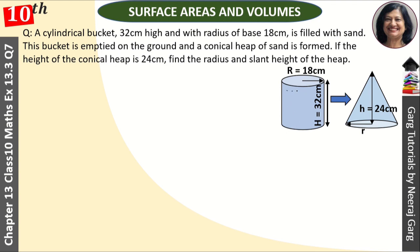We have put the sand on the ground and when we put it on the ground it forms the shape of a cone. The height of the cone is 24 centimeters. We have to find the radius R and also the slant height L. The simple principle is: volume of cone is equal to volume of cylinder.